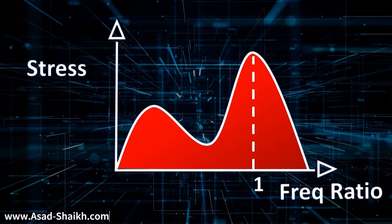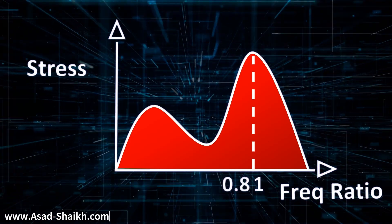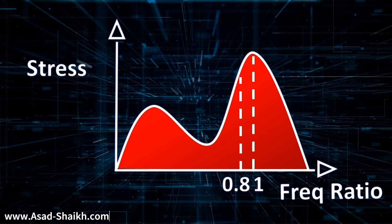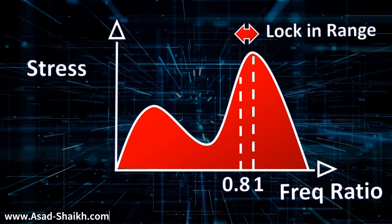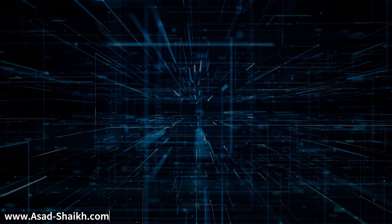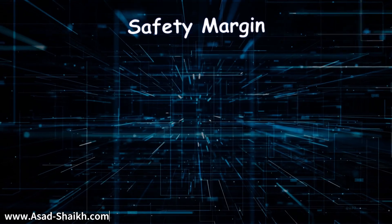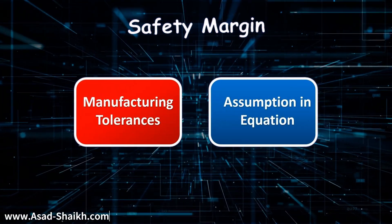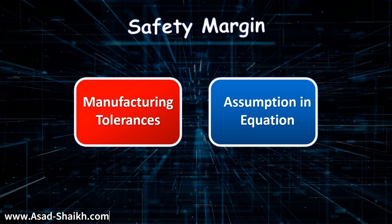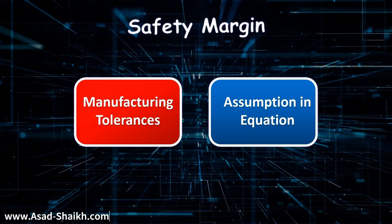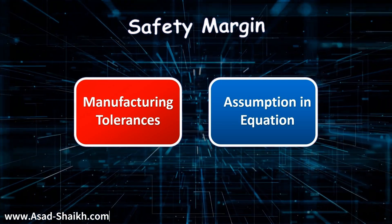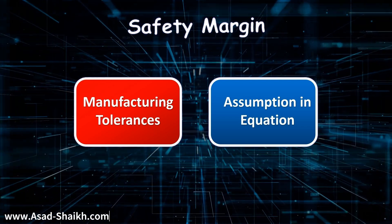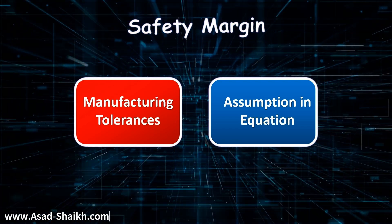In our graph, 1 is the resonant frequency and 0.8 is very near to it. ASME PTC says that for this lock-in range you must avoid. The second reason is also a safety margin, because you need to account for manufacturing tolerances and assumptions in the equations. So taking all into account, the first criteria of ASME PTC is that the frequency ratio must be less than 0.8.